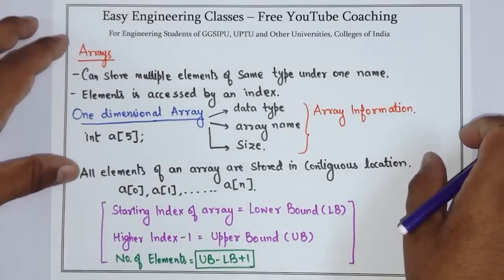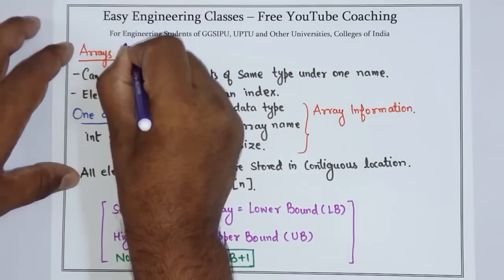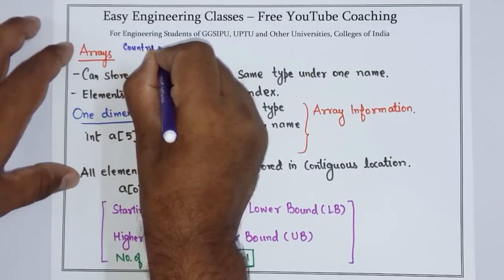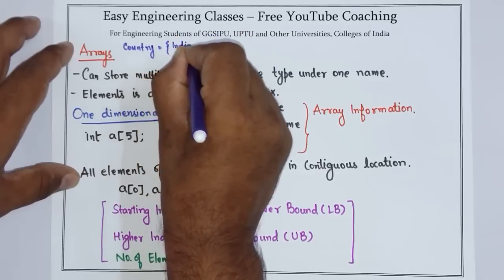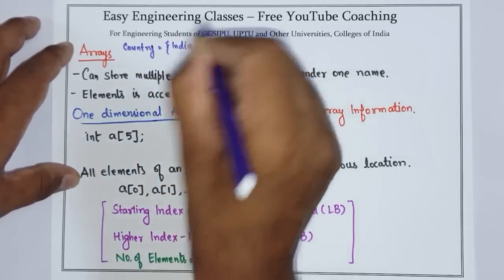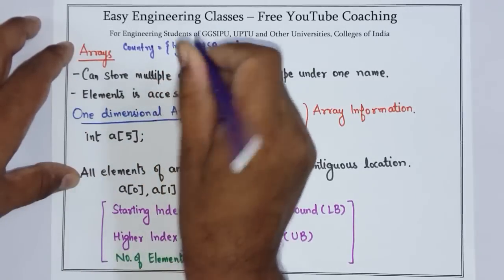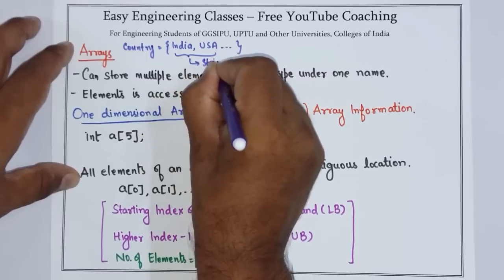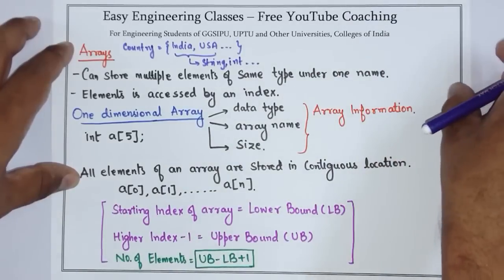then I will create a country array. And this variable will contain all the country names under one variable name — suppose India, USA, and so on. And these values should be of the same type, so either these values should be string, int, float, and so on.